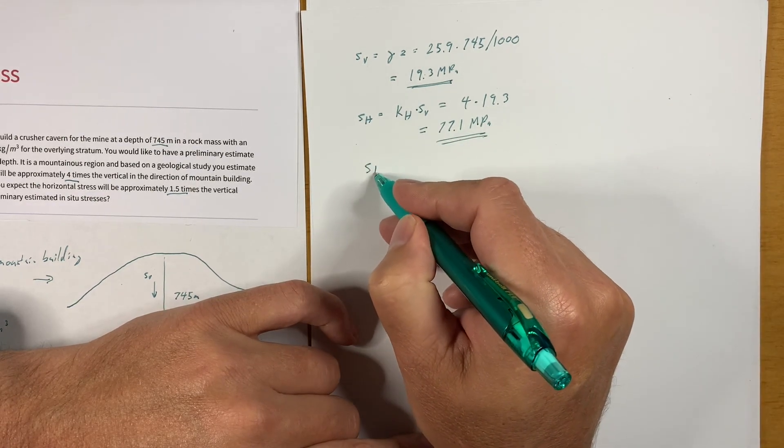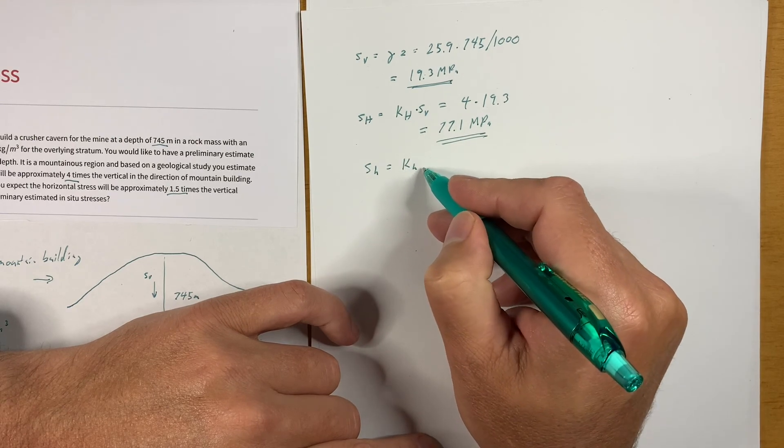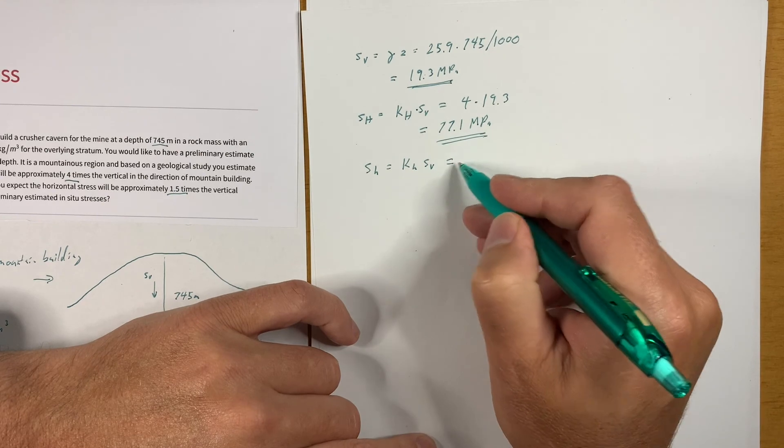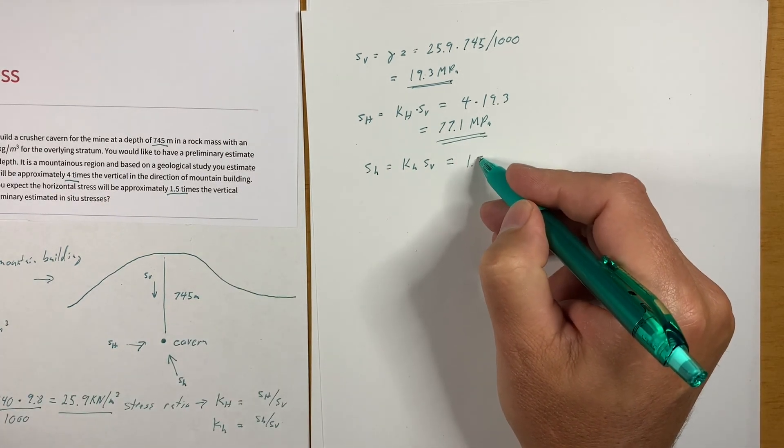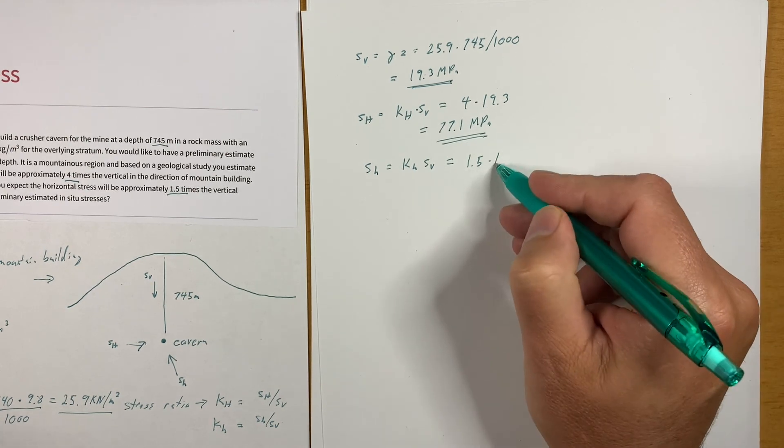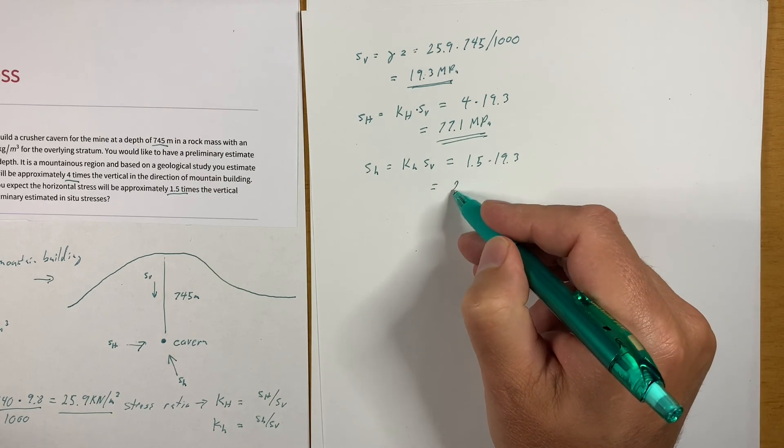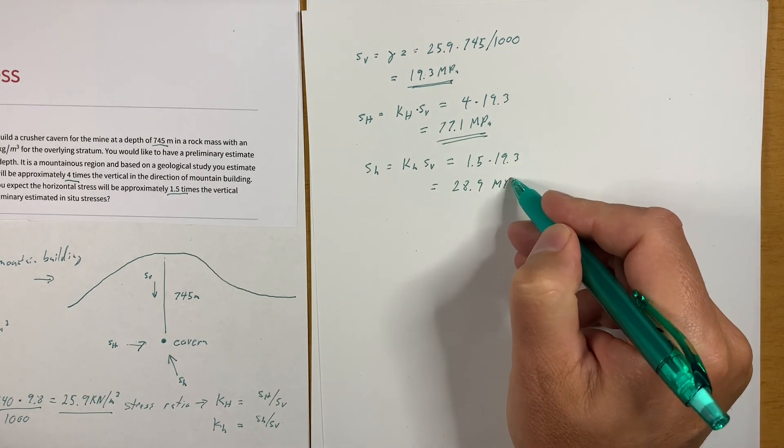And the lesser horizontal component with the lesser stress ratio times the vertical stress, is 1.5 times 19.3, is equal to 28.9 MPa.